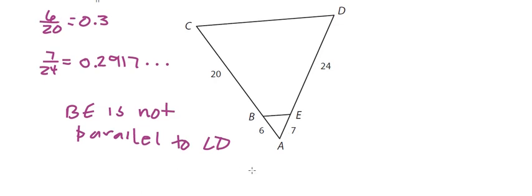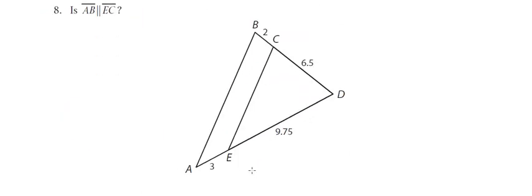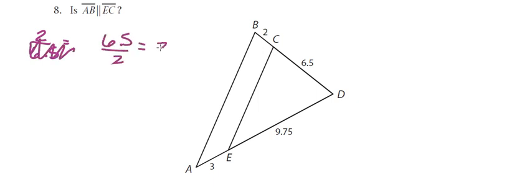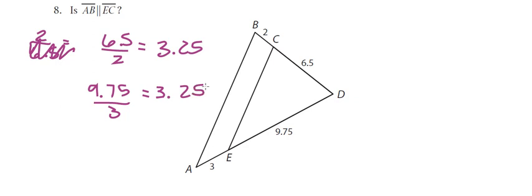Then for number 8, you set up your proportions. 6.5 over 2 gives us 3.25, and 9.75 over 3 also gives us 3.25. Since those relationships are proportional, AB is parallel to EC.